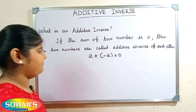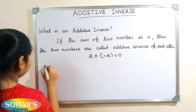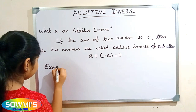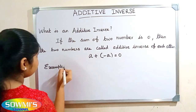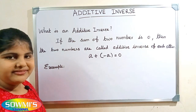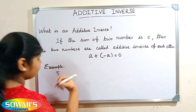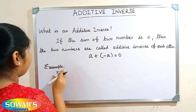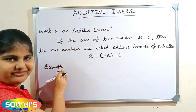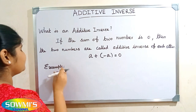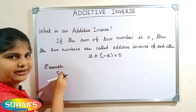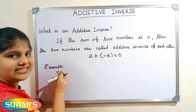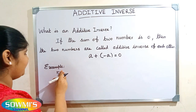Now, we will take some examples. For example, we can take five. Now we have to find the additive inverse of five. To find the additive inverse of a given number, just simply we have to take a number and add its opposite. So, we will get zero.